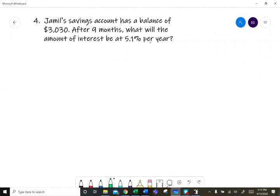Let's go through in the same way as before. He has a balance of $3030, so our principal amount is $3030. After nine months...